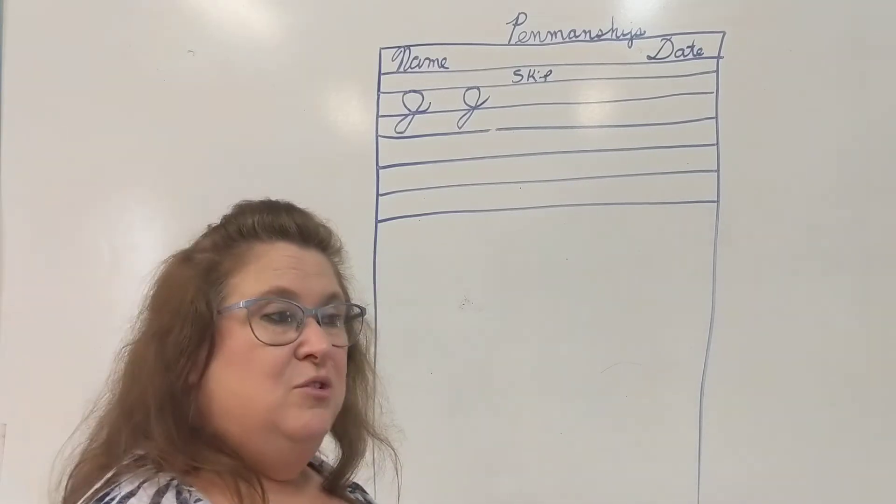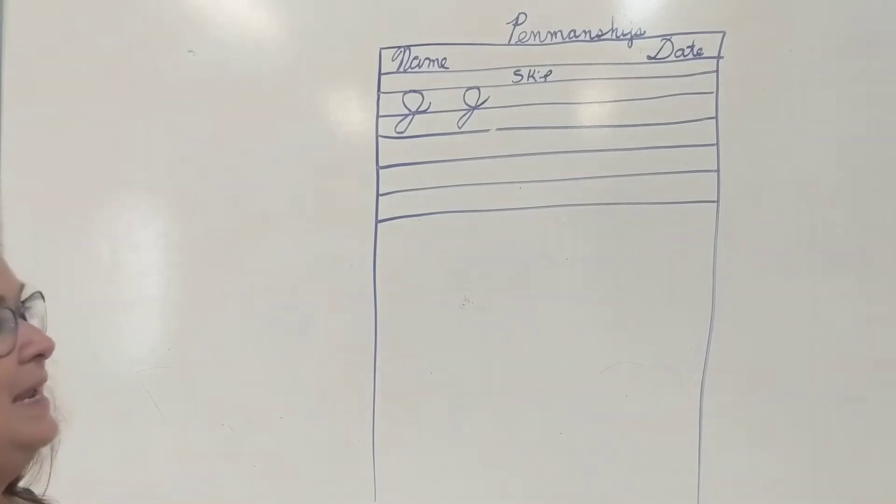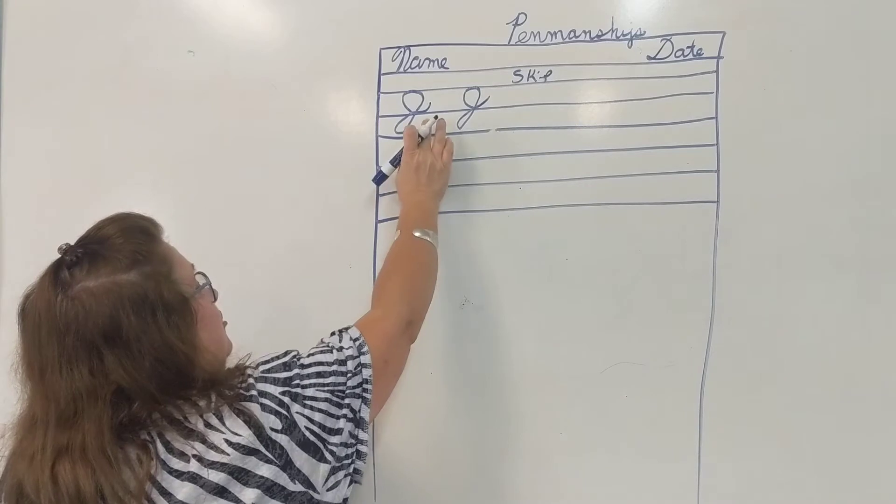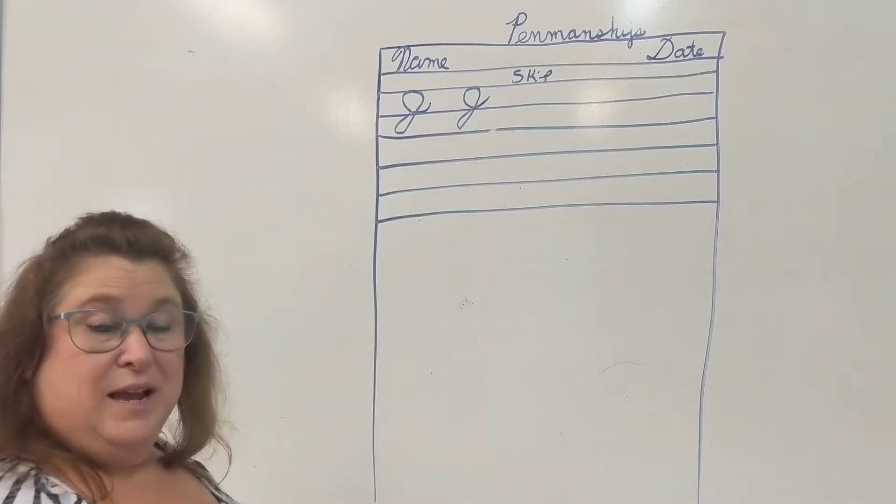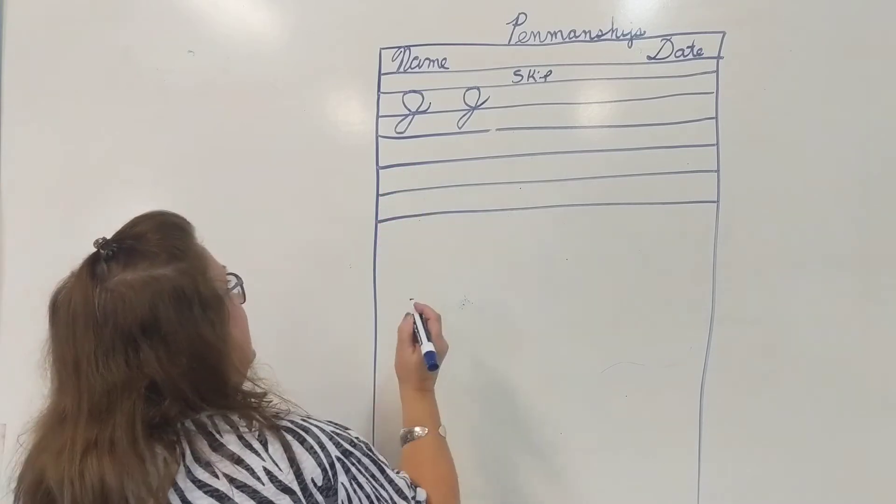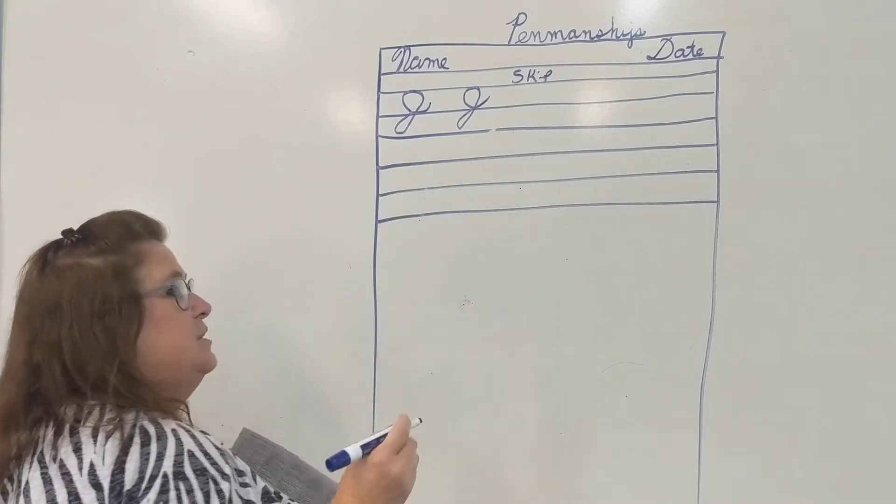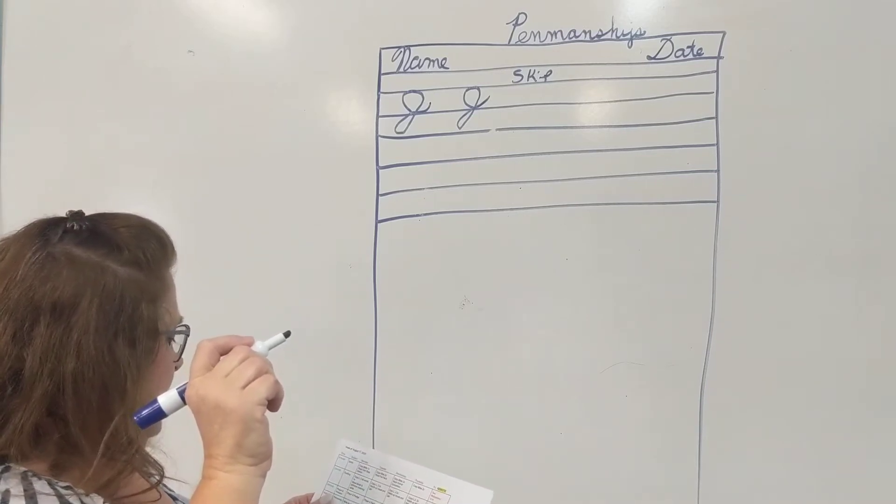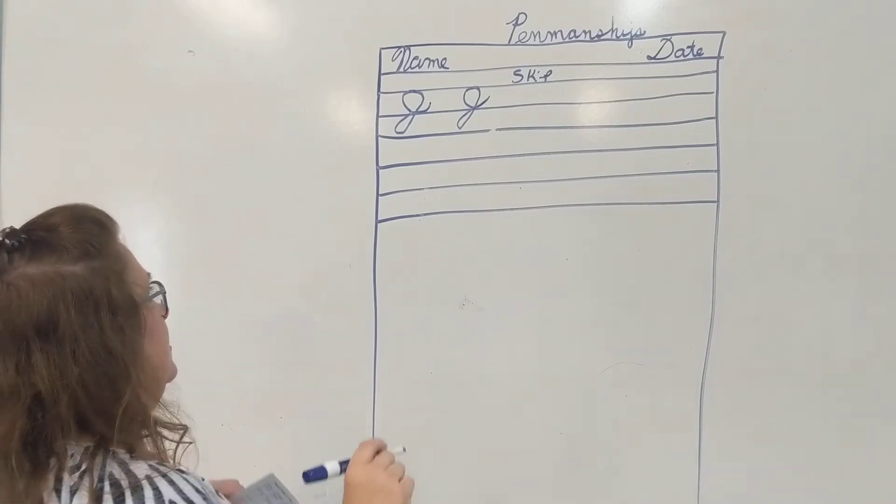Pause the video when you need. Next, we will be making lowercase J's. So you will skip a line. It's going to look like you're not, though, because your tail of your capital J is going to be in that skipped line. So on your next line, to make a lowercase J, we start just as if we were making an I. Have we made I's yet? Yes, we made I's Thursday. So here we go.